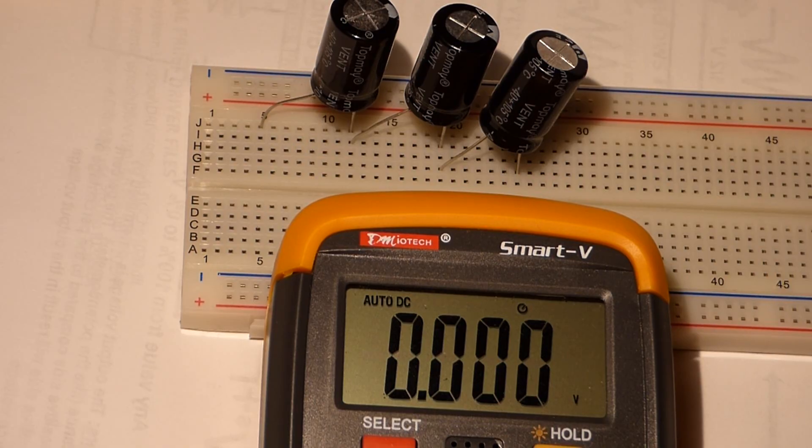But as you notice, we applied 9 volts. Each one only got about 3 volts. So that's why you can charge series capacitors to a higher voltage than the rating.